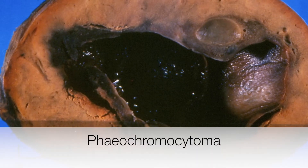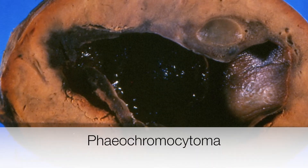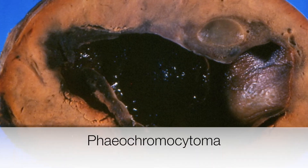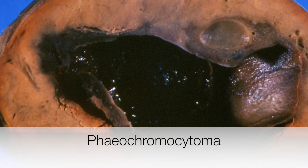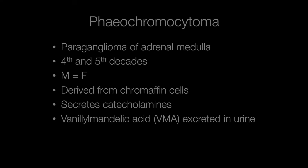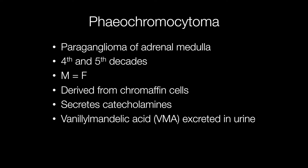This is the gross appearance of a tumour of the adrenal medulla called a pheochromocytoma. Pheochromocytomas may be defined as paragangliomas of the adrenal medulla. They tend to occur most frequently in the fourth and fifth decades.